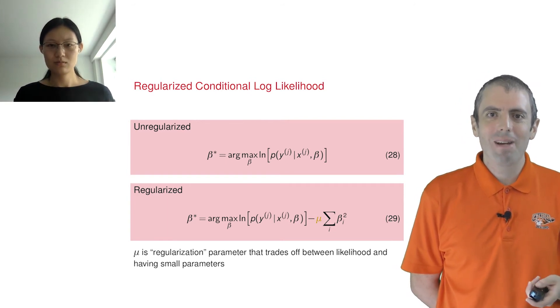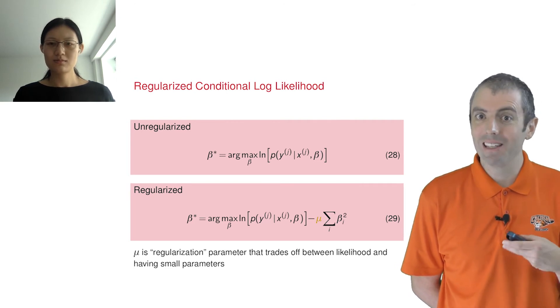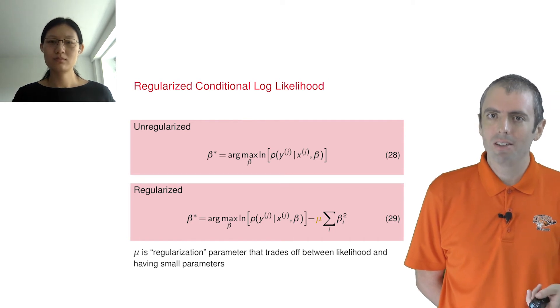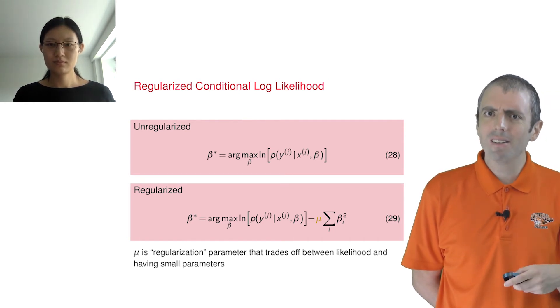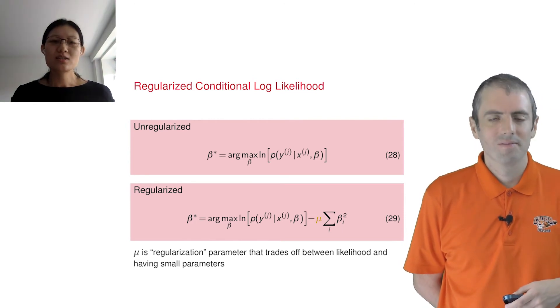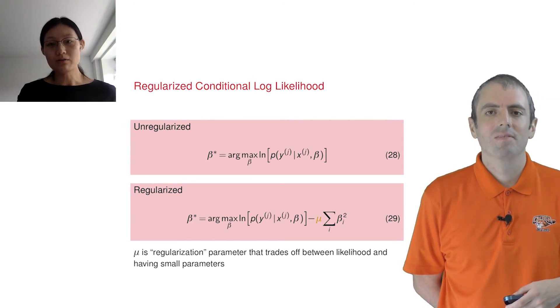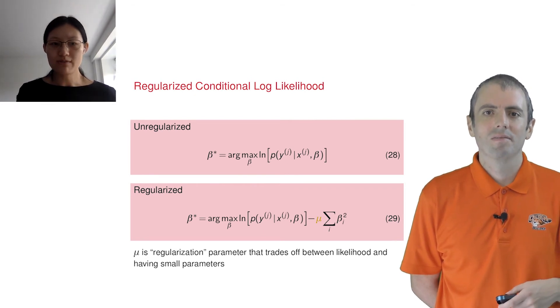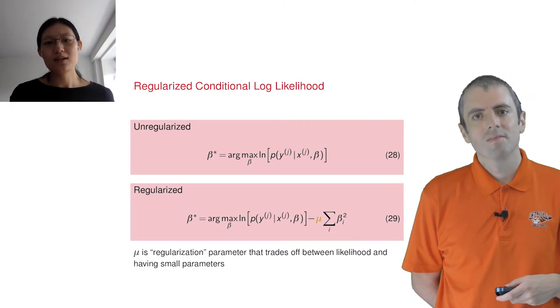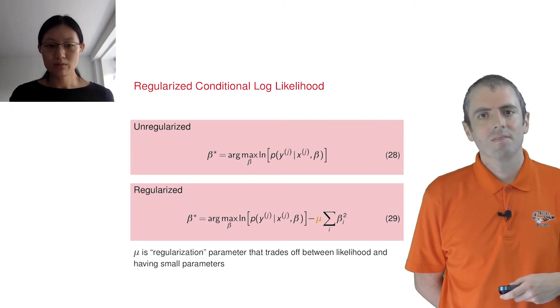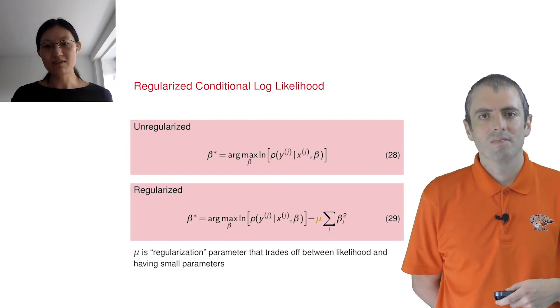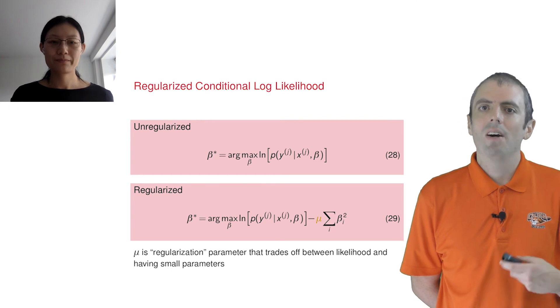When we talked about the residual sum of squares objective for the linear regression task, that corresponded to a Gaussian interpretation over the errors. The penalty term here looks a little like that again. Is there a connection? So this does correspond to a prior over the weight values, where you want to prefer weight values that are smaller. Indeed, it assumes that the betas come from a Gaussian with mean 0. You can also have what are called informed priors if you have a guess of what the feature weights might be.